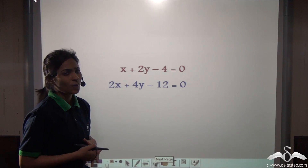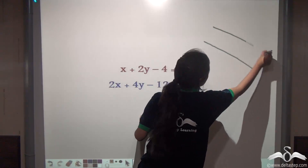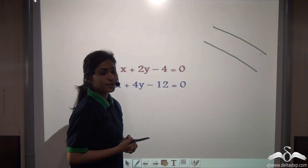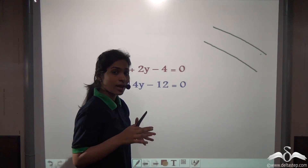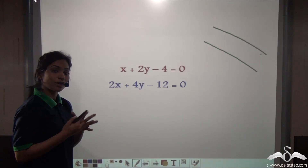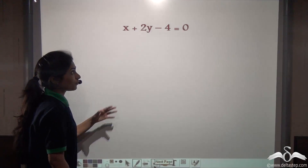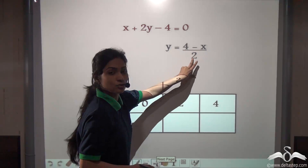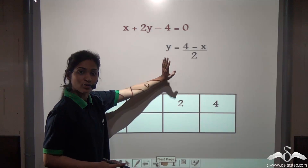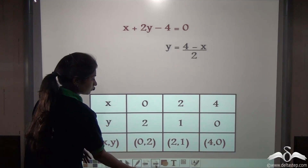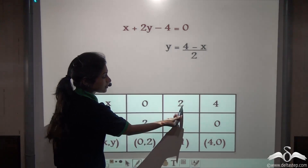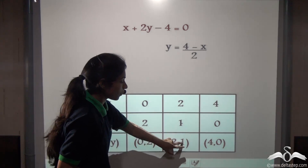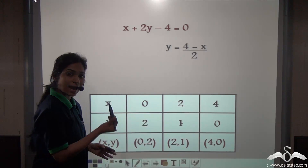Now what about parallel lines? When will we get parallel lines on the graph paper? If two lines are parallel, they will never intersect one another, meaning they will never have a common solution. Here we have two equations. We first make y the subject and get y equals (4 minus x) by 2. Substituting x values: when x is 0, y is 2; when x is 2, y is 1; when x is 4, y is 0. So the three coordinates are (0, 2), (2, 1), and (4, 0).